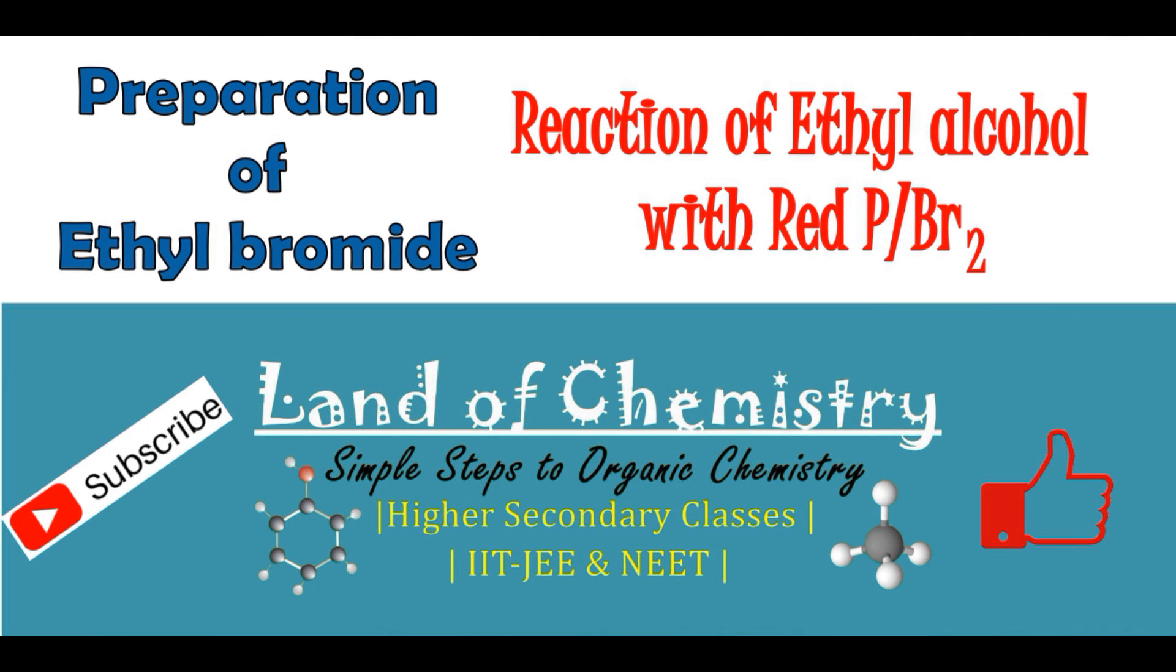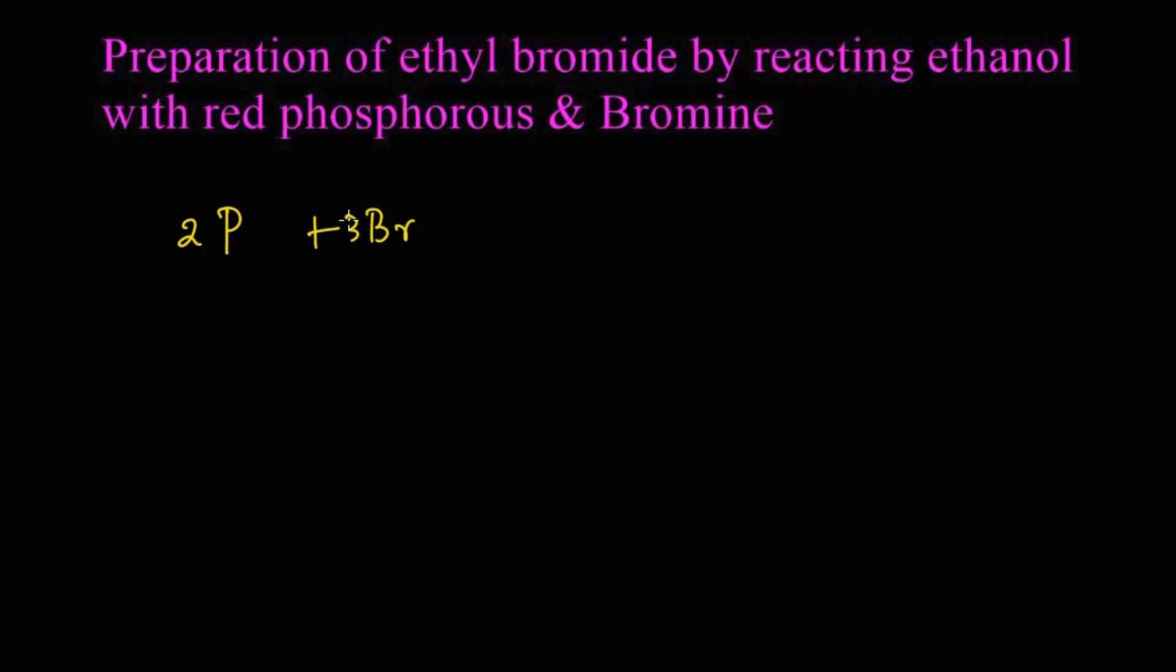In this video we are going to learn the reaction of ethyl alcohol with red phosphorous and bromine, that is preparation of ethyl bromide. Come on, let's learn the reaction. Two phosphorous will react with three bromine molecules to give two PBr3, that is phosphorous tribromide.